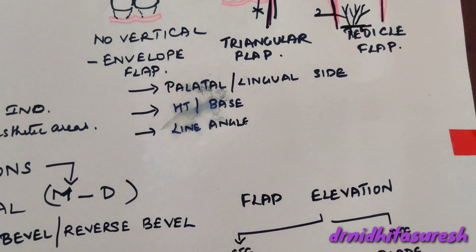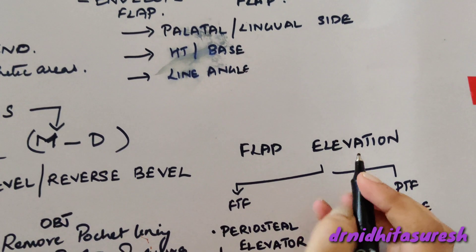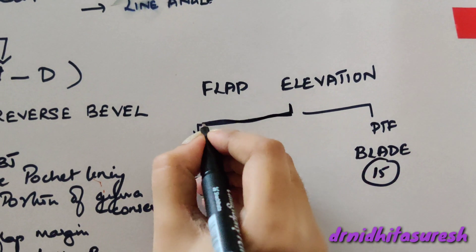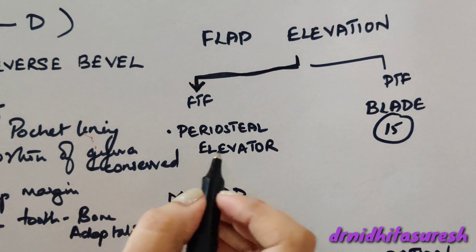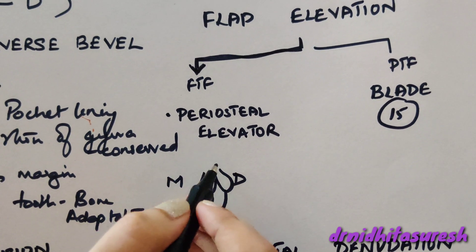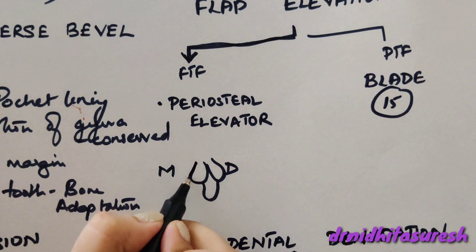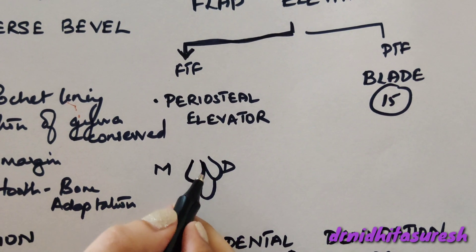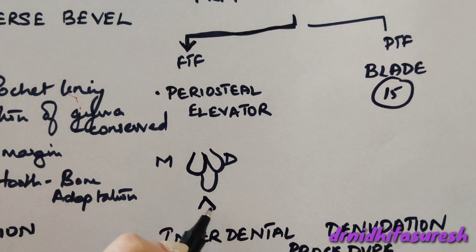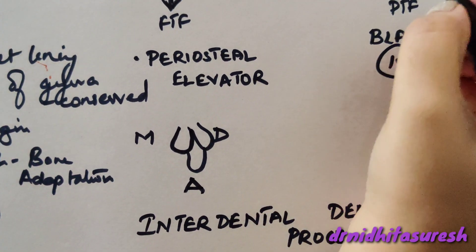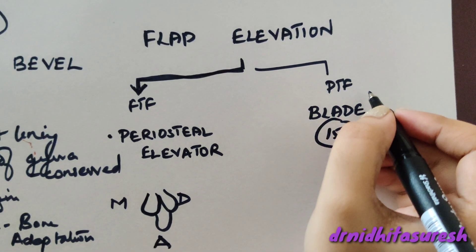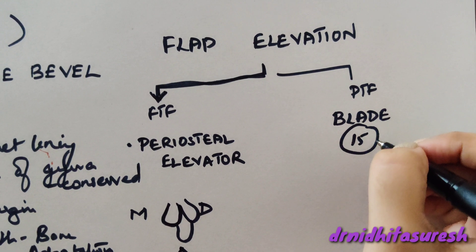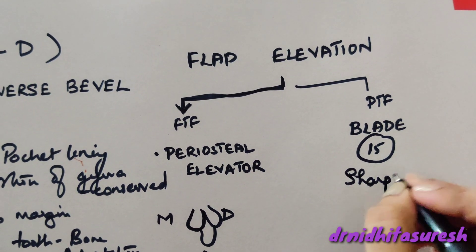Next is flap elevation. In full thickness flap we use the periosteal elevator to reflect the flap, and the direction is first mesial-distal and then apical. For partial thickness flap, we use the 15 blade to do a sharp dissection.